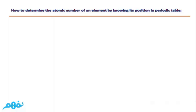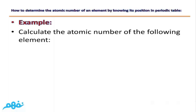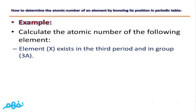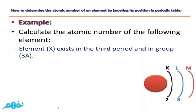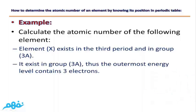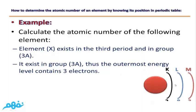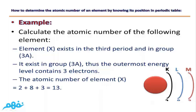Now let's do the reverse: how to determine the atomic number of an element by knowing its position. For example, unknown element X exists in period three and group 3A. Since it is in the third period, it has three energy levels. Since it is in group 3A, its outermost energy level contains three electrons. The atomic number of X equals 2 + 8 + 3 = 13. This element is aluminum.